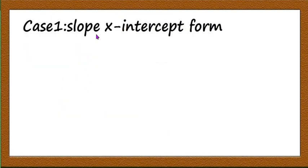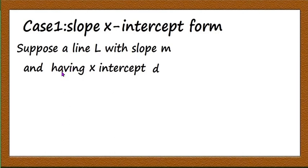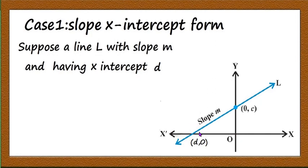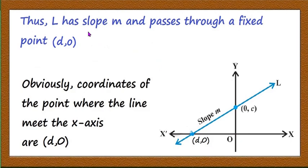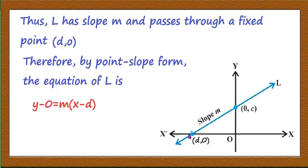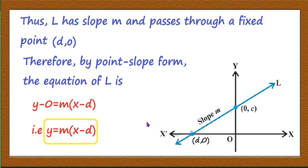Similarly, we can find the equation of the line when the slope and x-intercept are given. Suppose a line L has slope m and x-intercept d. The coordinate of the point where the line meets the x-axis is (d, 0). Using the slope-point form: y - 0 = m(x - d), that is y = m(x - d). This is the equation of the line with slope m and x-intercept d. These results we have to memorize.